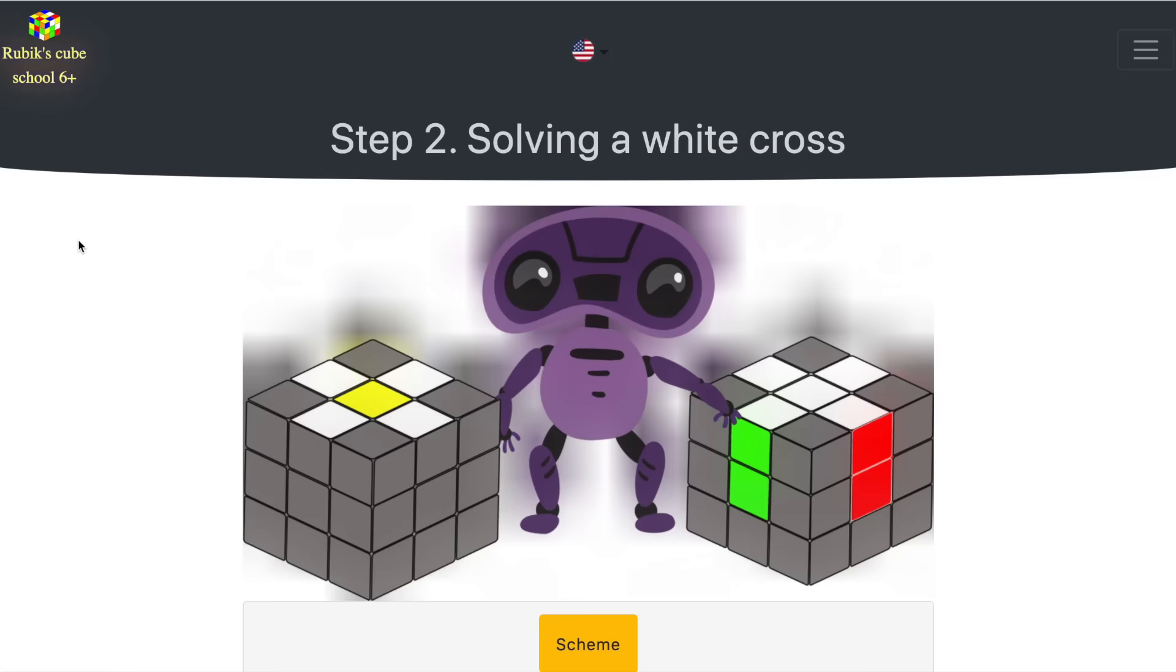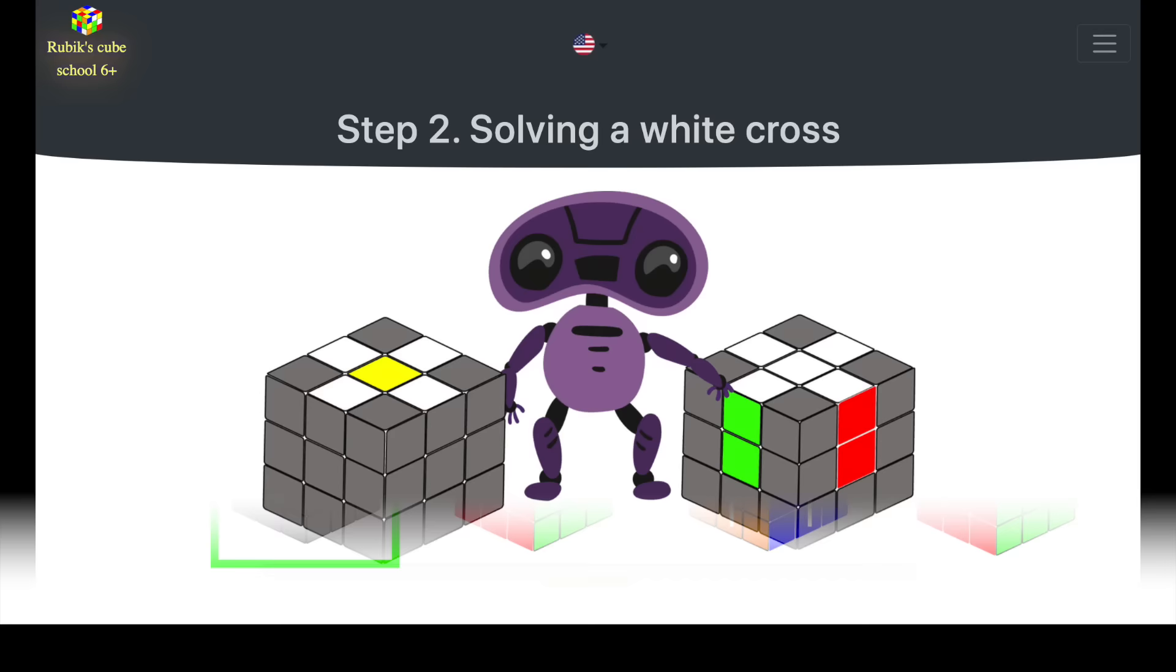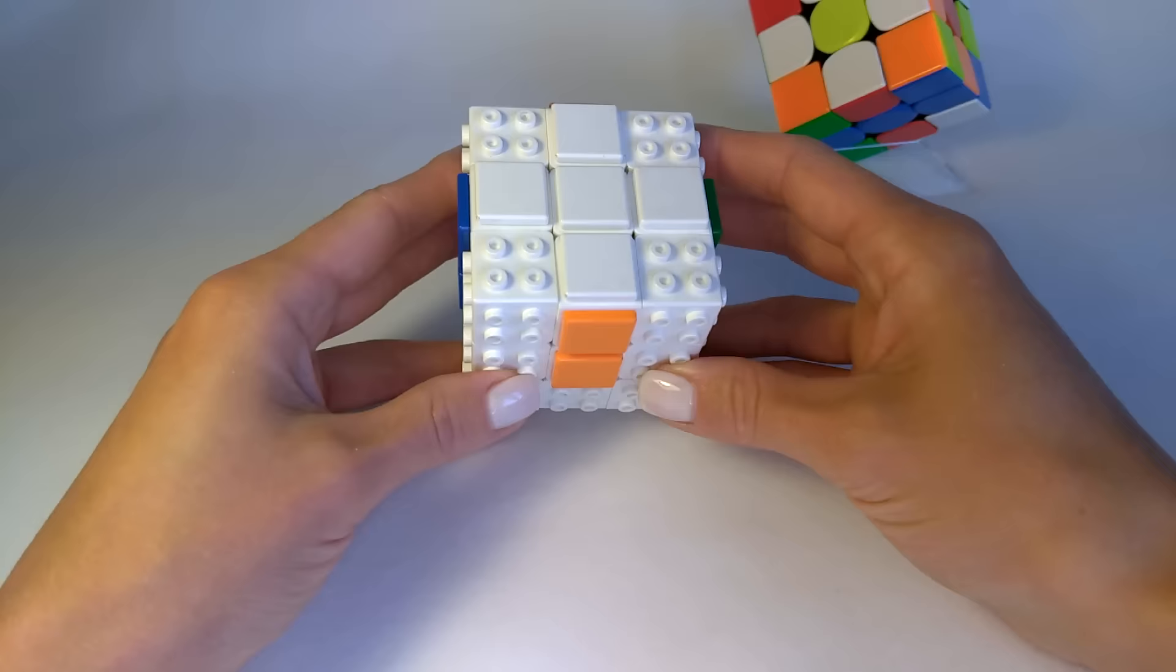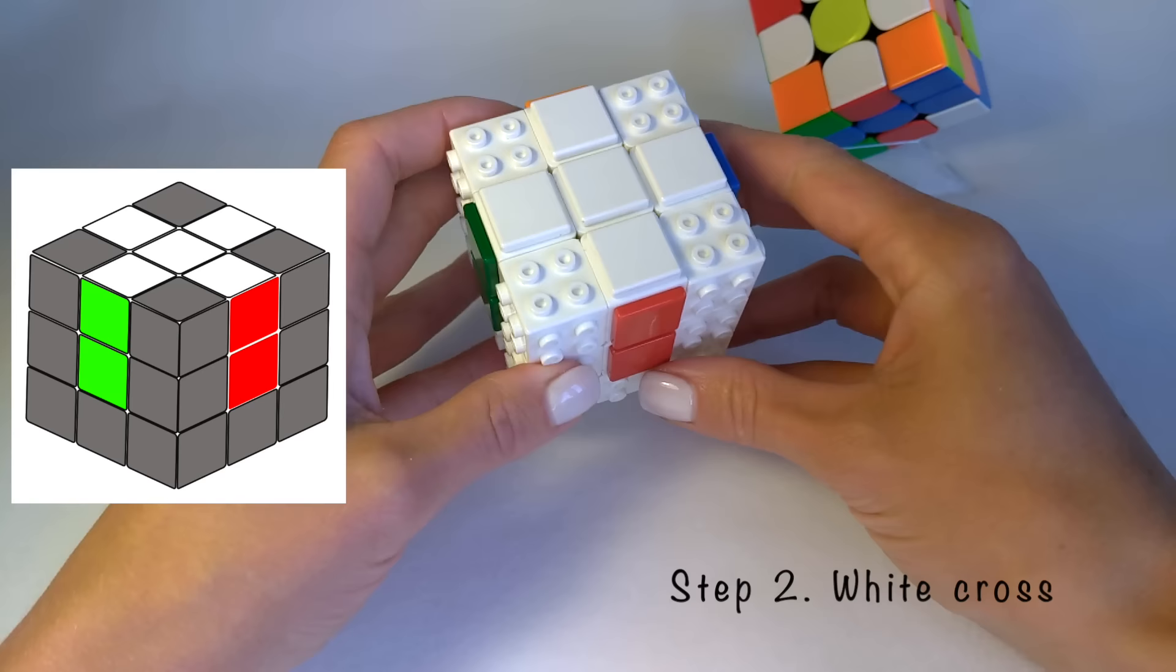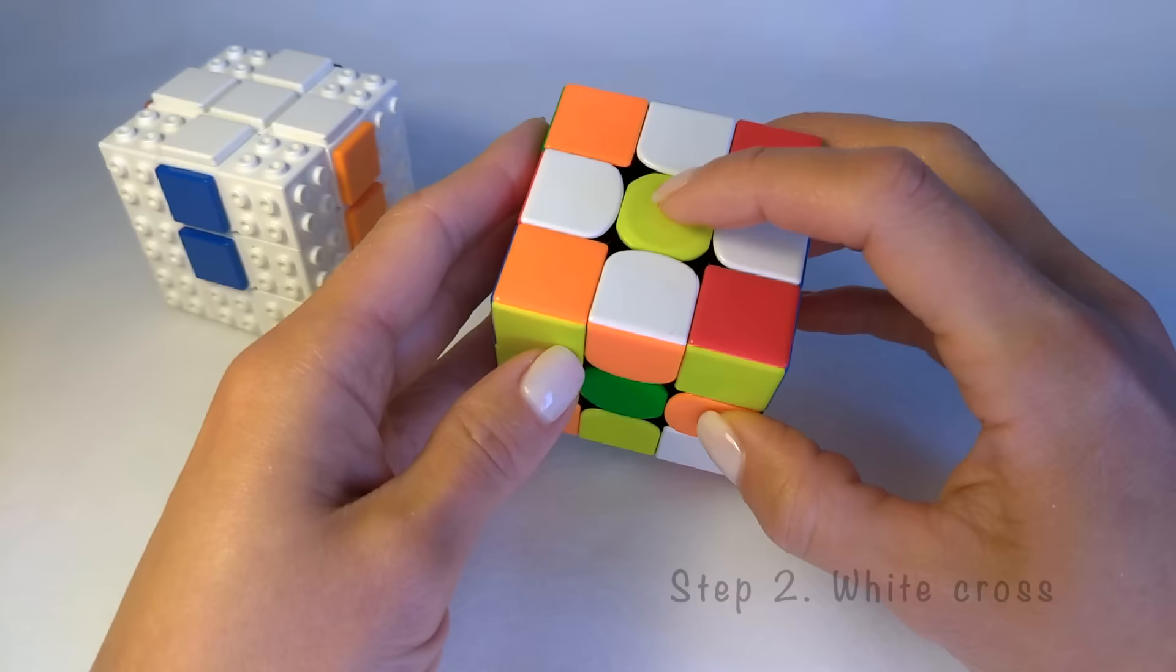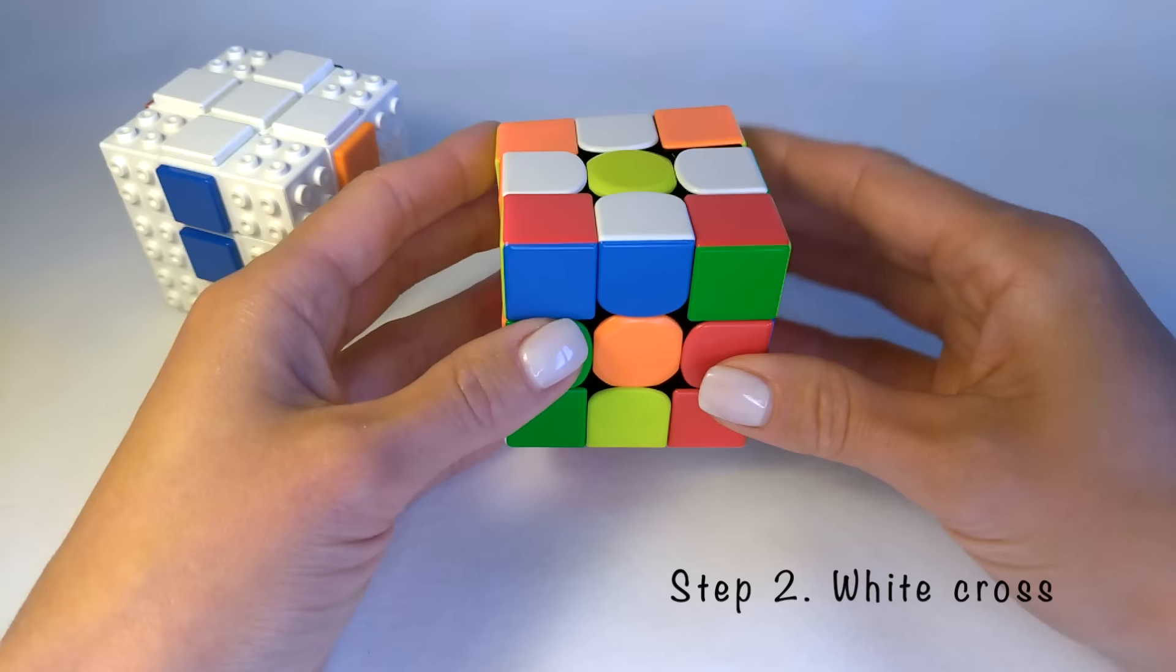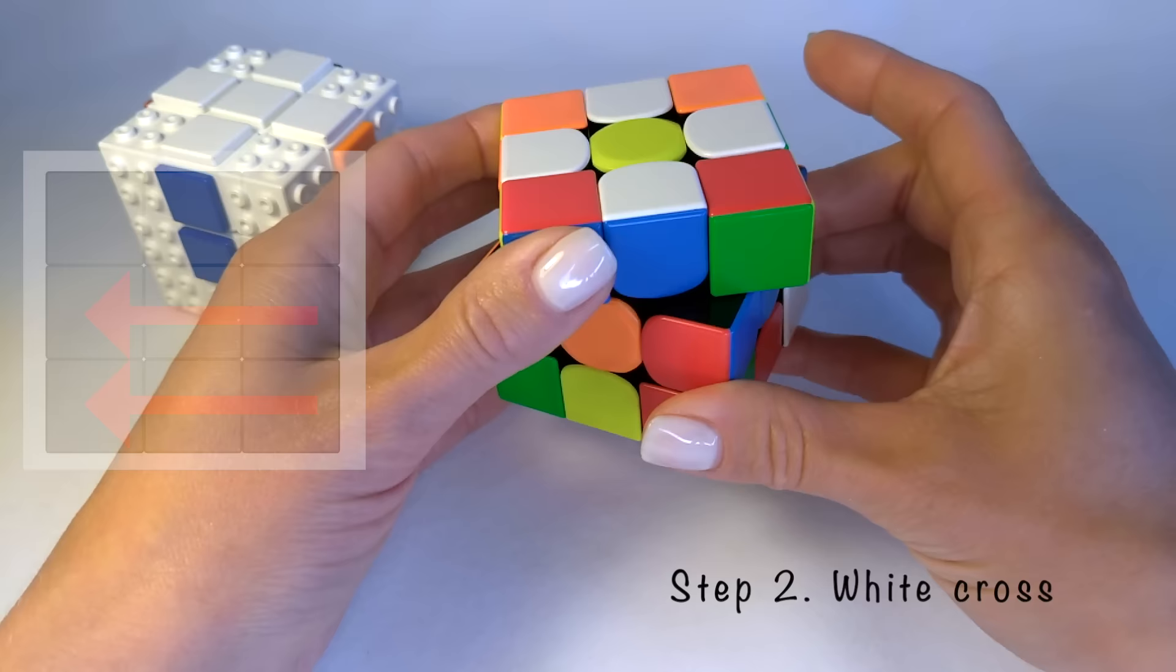Last lesson we learned how to make a daisy. The next step is gonna be solving the white cross. A complete full white cross should look like that. The white cross over here and the second part of the white edges also matches the centerpiece color. Take the cube. The daisy should be on the top. Look at the white edge and check the second color. For example, it's blue. Look at the edge and rotate two bottom layers.